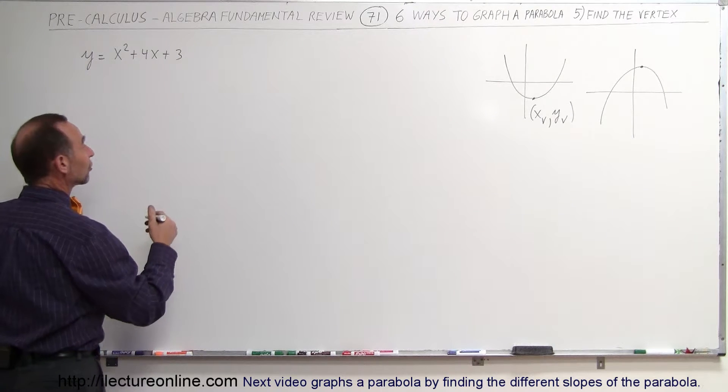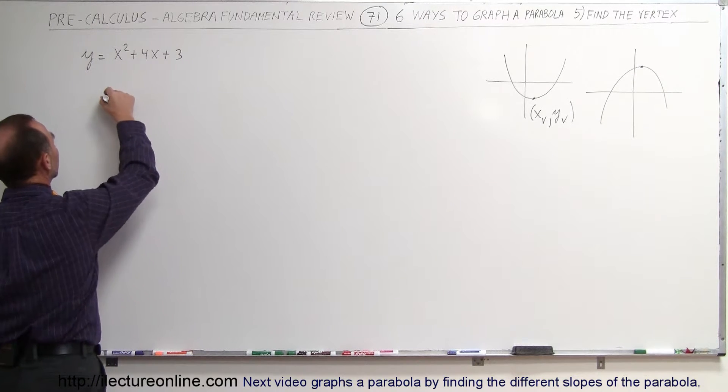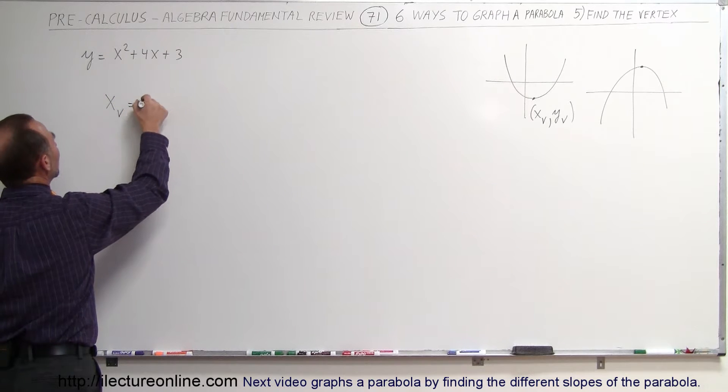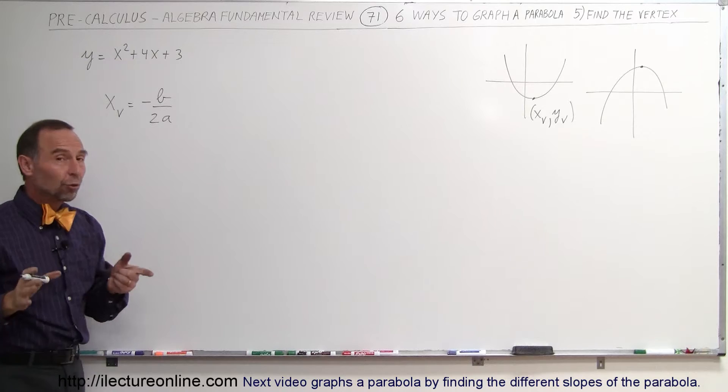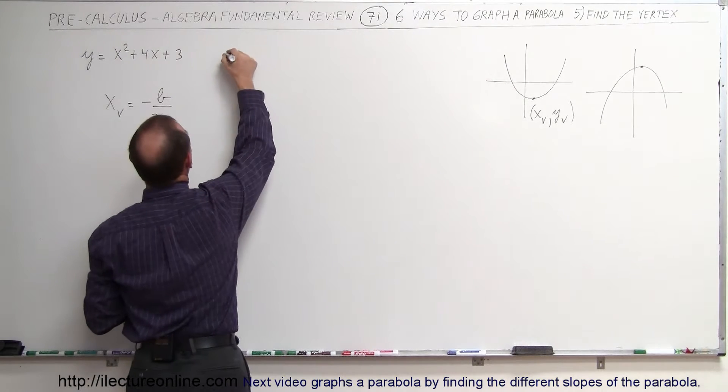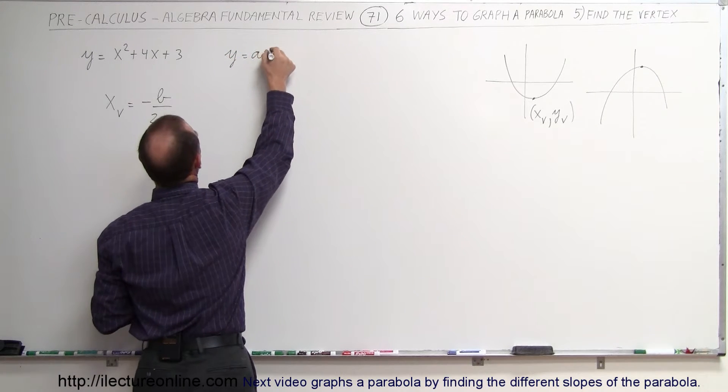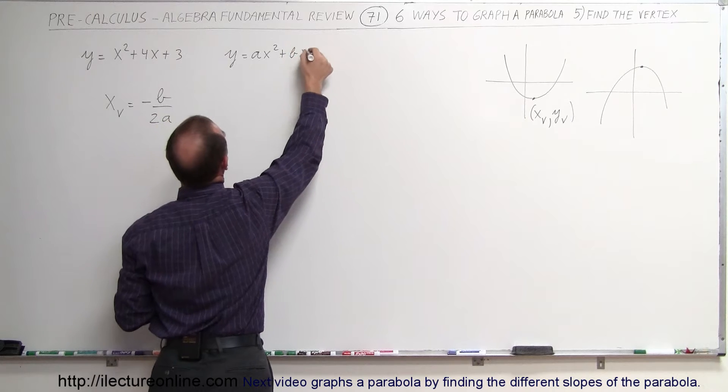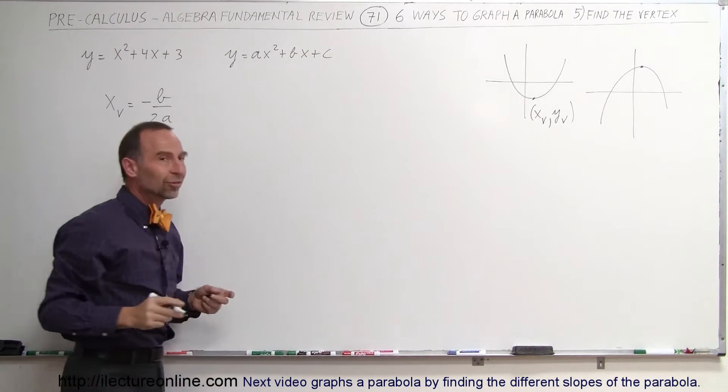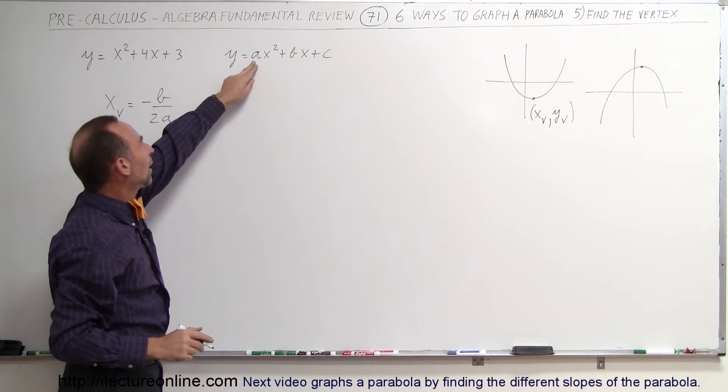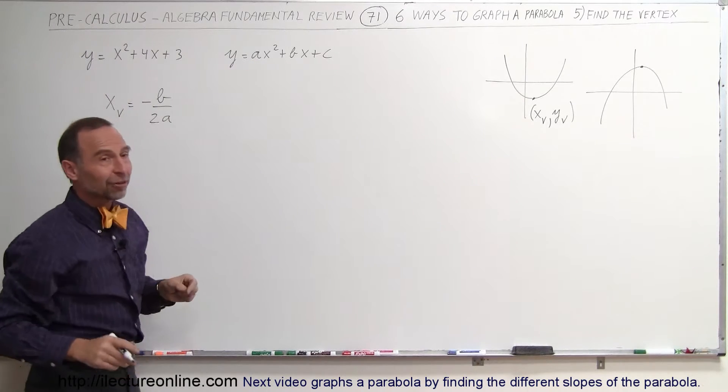Now to find the x-coordinate of the vertex, x sub v, that is equal to minus b divided by 2a. Now remember that the general form of a quadratic equation is y equals ax squared plus bx plus c. So we take the b, the coefficient of the x term, and divide it by twice the coefficient of the x squared term and we put a negative sign in front of it and that gives us the x-coordinate of the vertex.